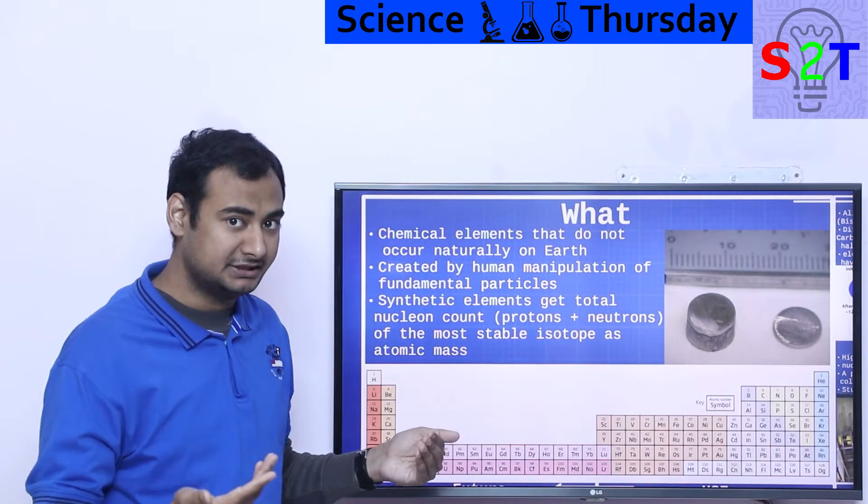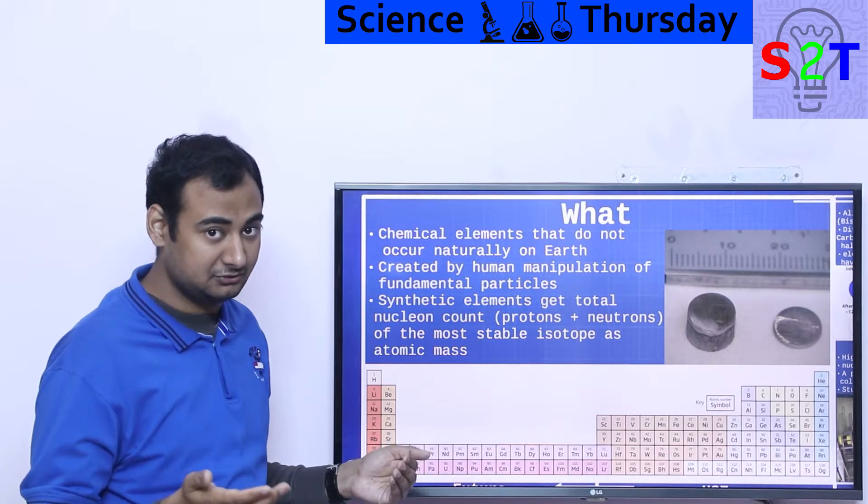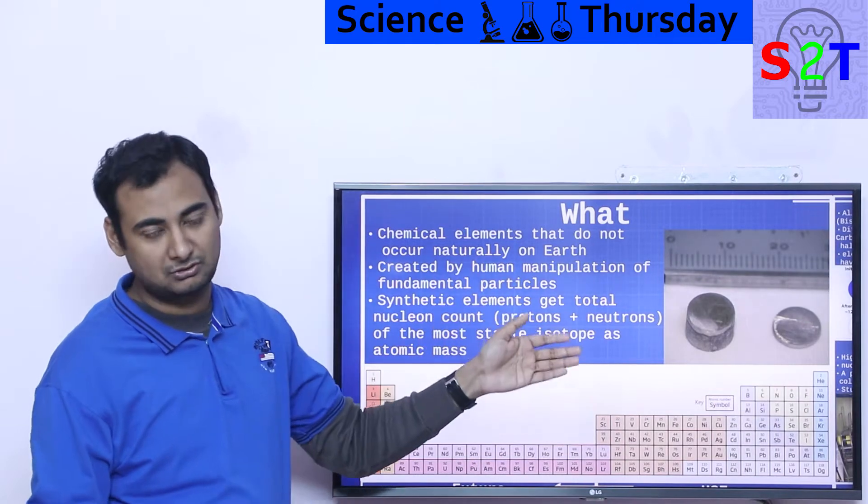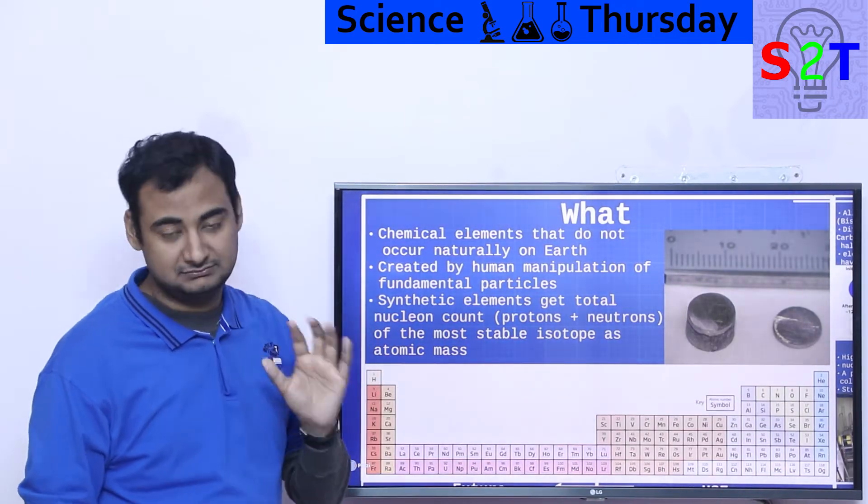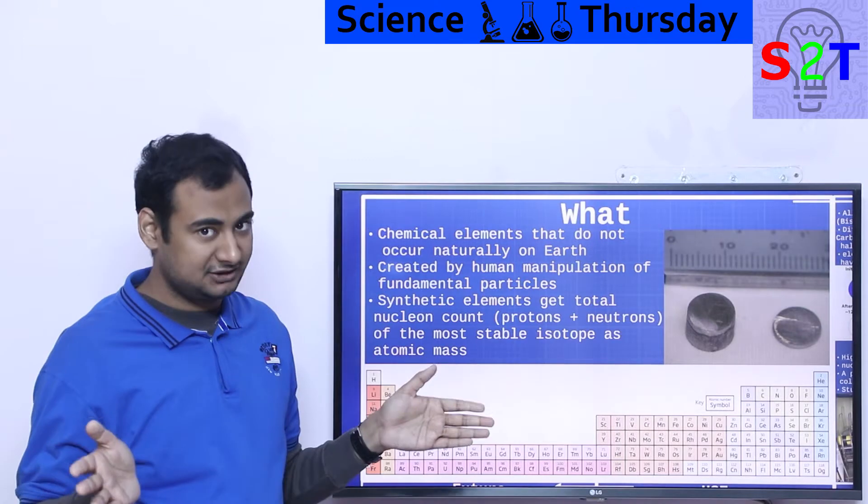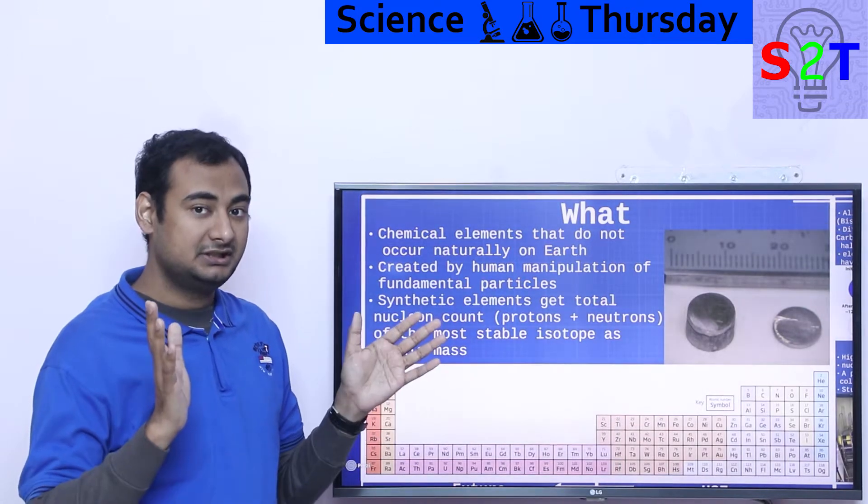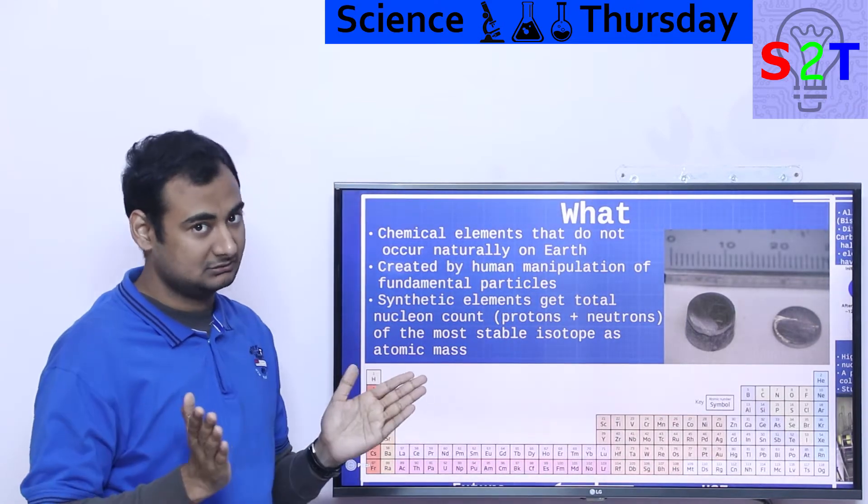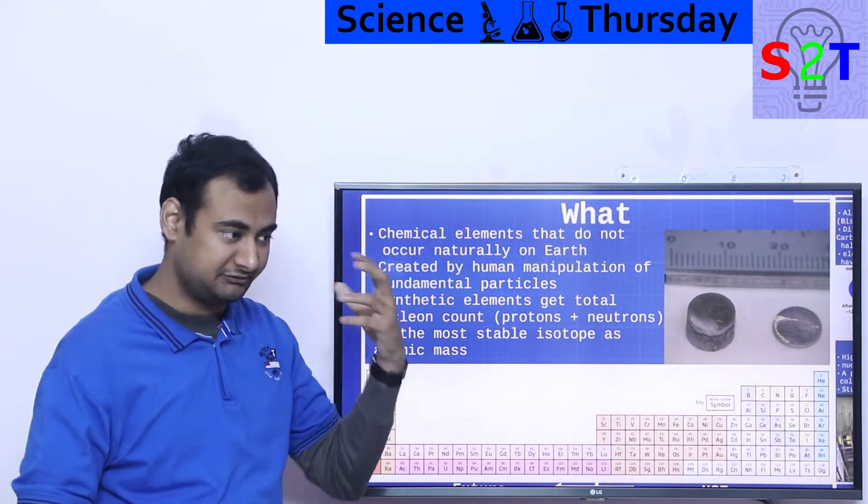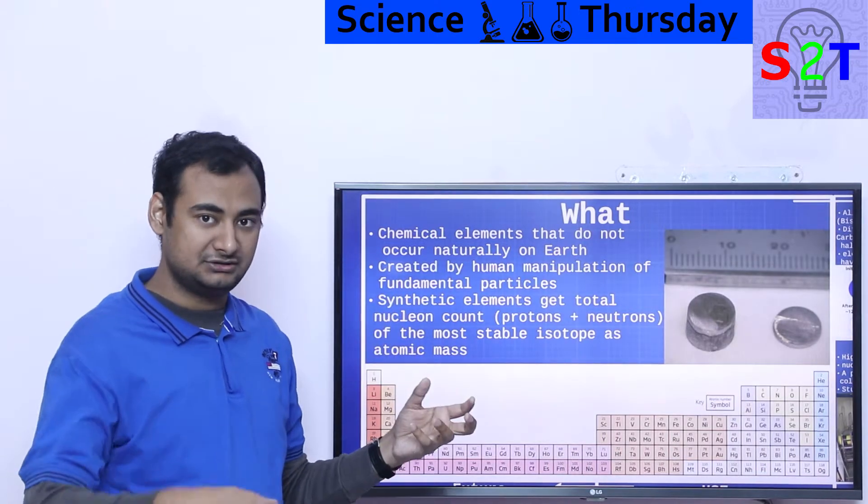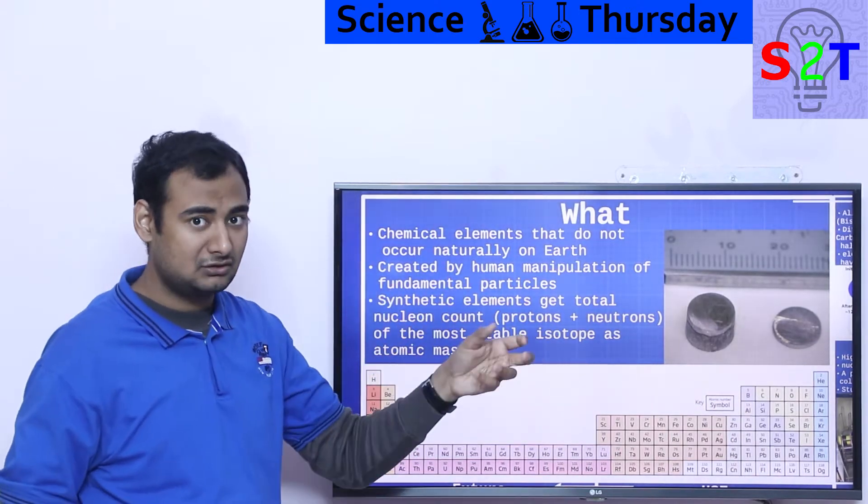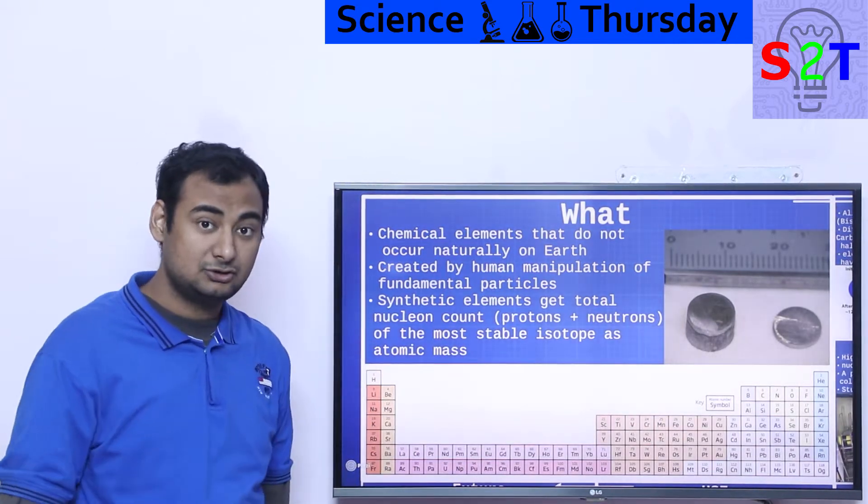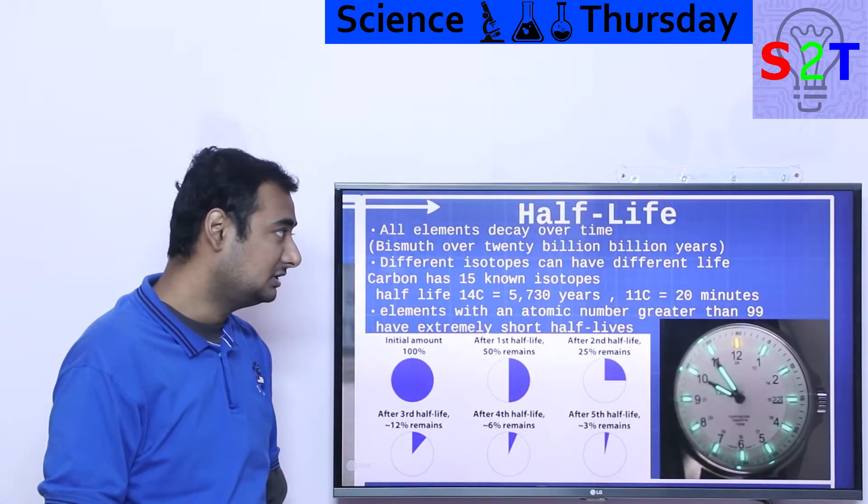In case of carbon there are many isotopes, but the most common one would be denoted on a periodic table. But when you are talking about synthetic elements, when we are building it, there is a different criteria. The nucleon count would be proton plus neutron, but if you made five isotopes of said element, the longest living one will get the certification on periodic table.